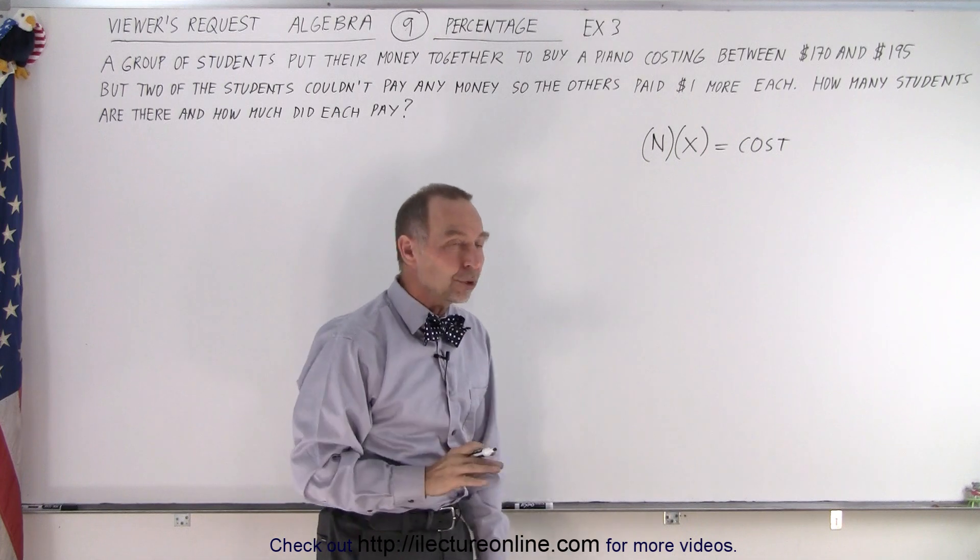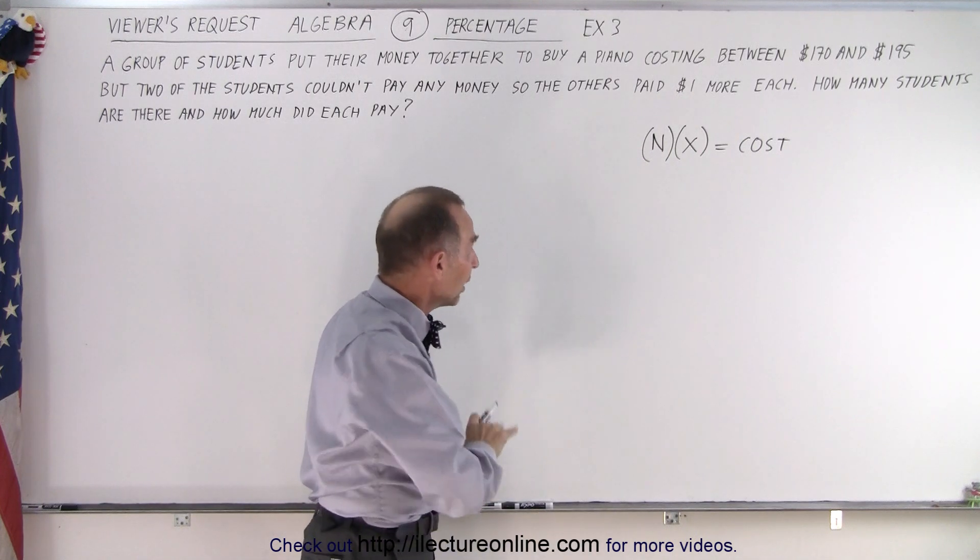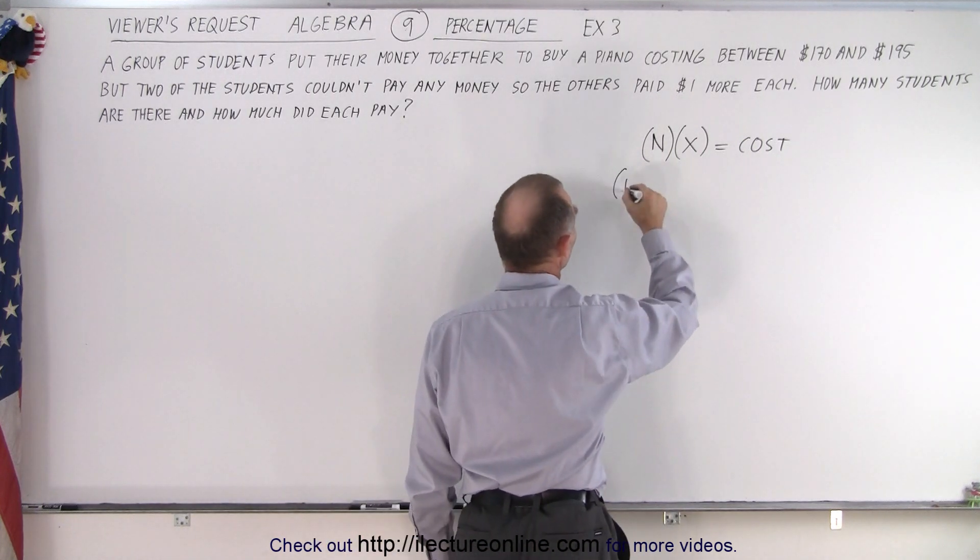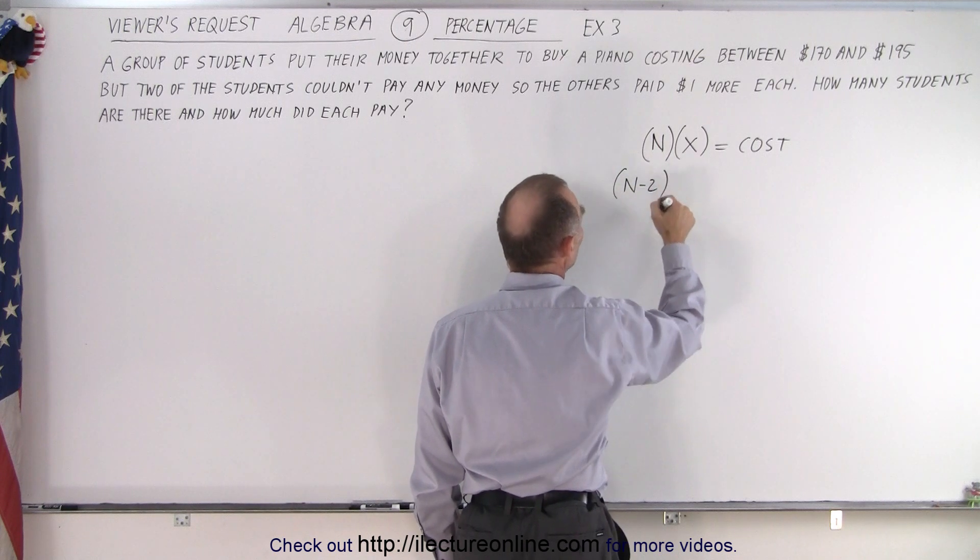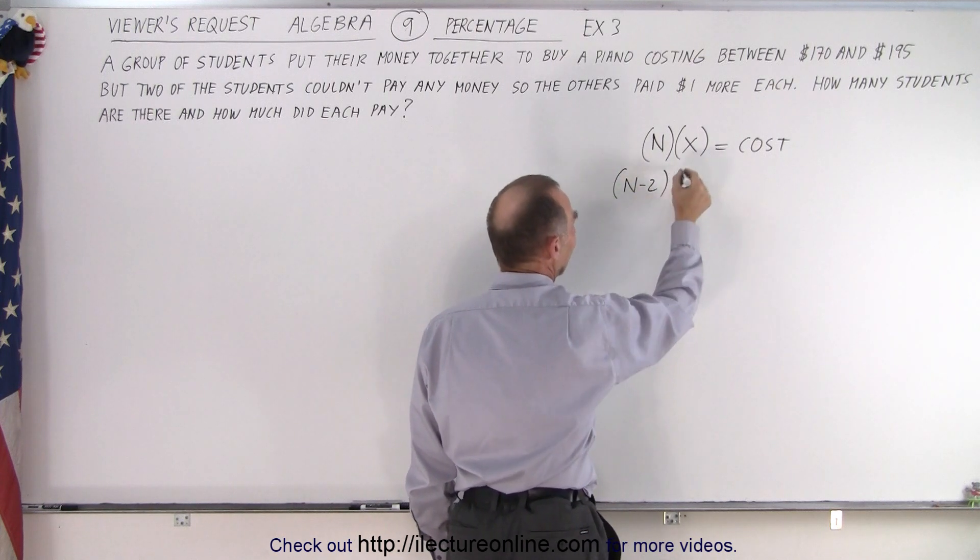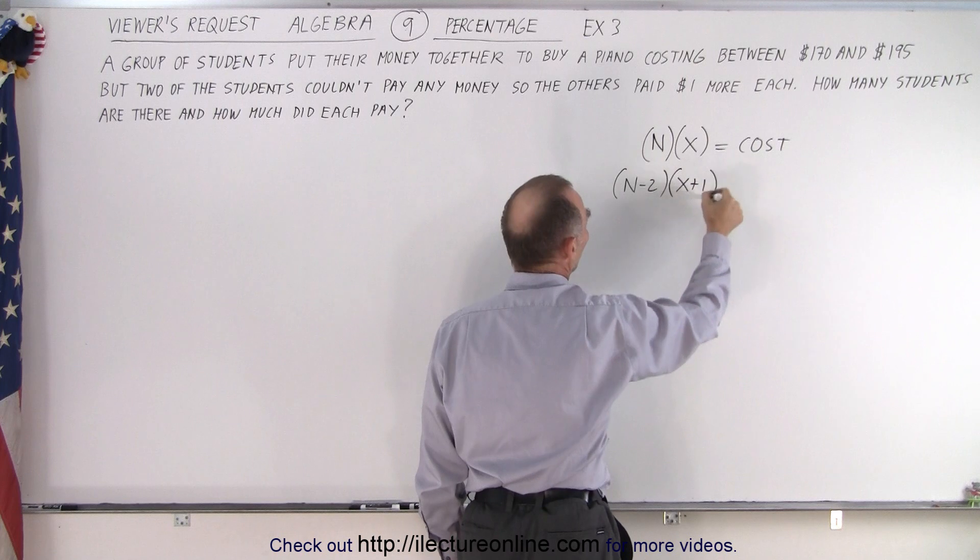But of course not all of them could pay. Two of them could not pay, so the number of students that were able to pay was two less than the original number, and each of them had to pay $1 more.